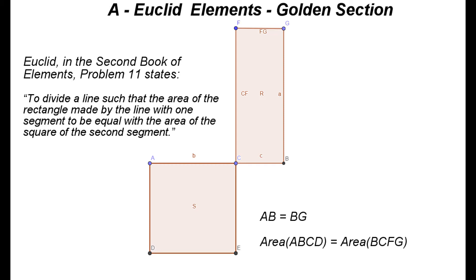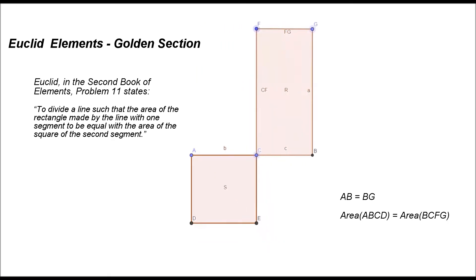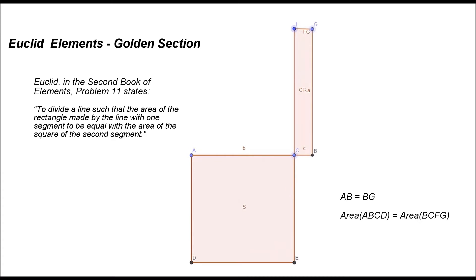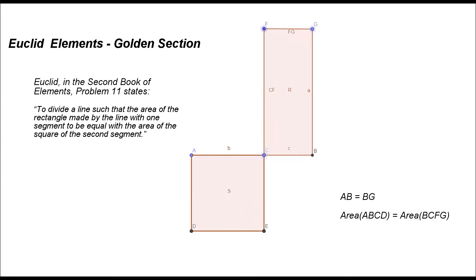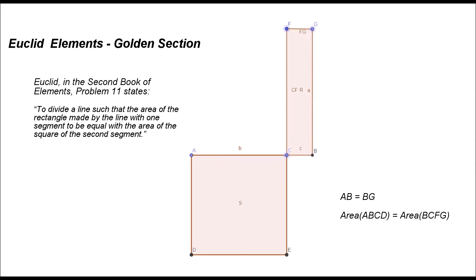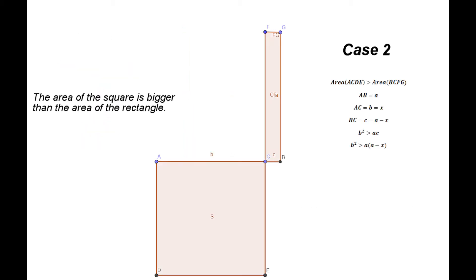First, let's look into the way Euclid introduces the golden section in his Elements. Euclid, in the second book of Elements, problem 11, states: 'To divide a line such that the area of the rectangle made by the line with one segment is equal with the area of the square of the second segment.' This definition shows, in a profound and undeniable way, the direct connection between the golden section and the surface, or the area, as the domain absolutely required for generating the golden section. In simpler words, the golden section is a relationship between line segments, but its full existence can only be seen and understood on a surface.